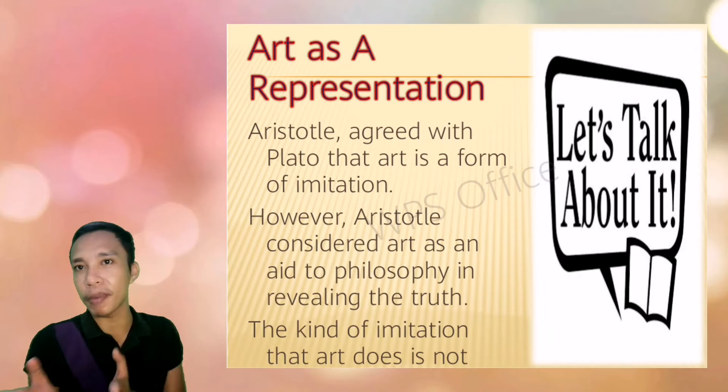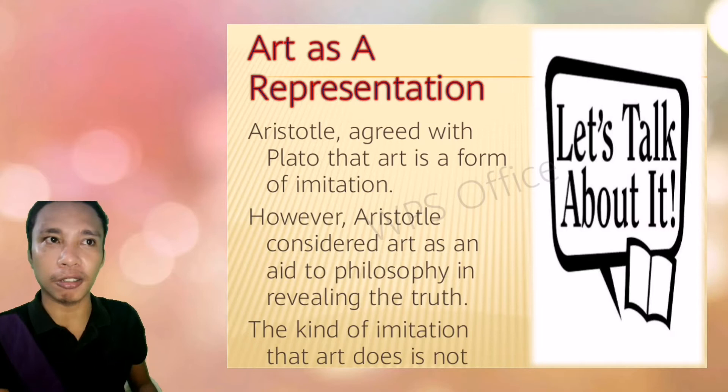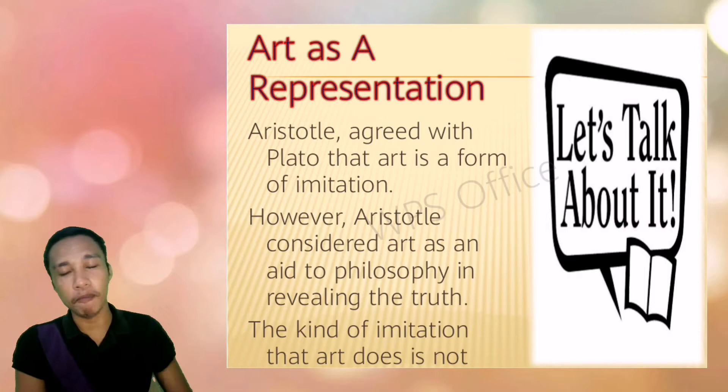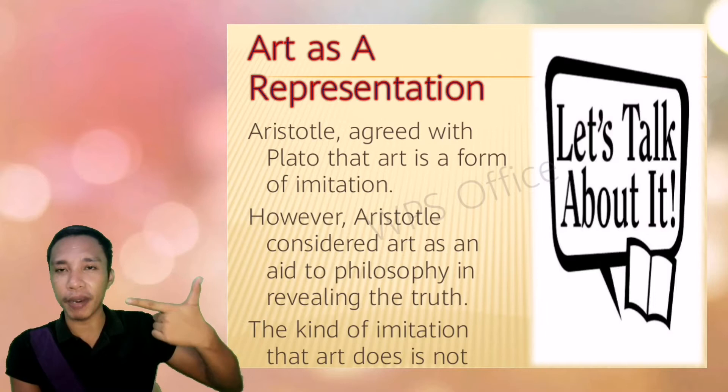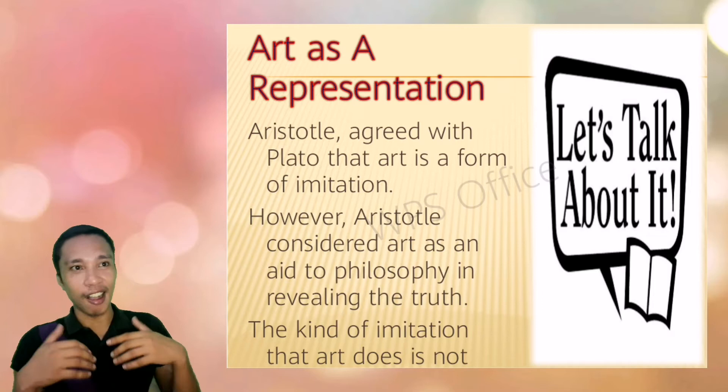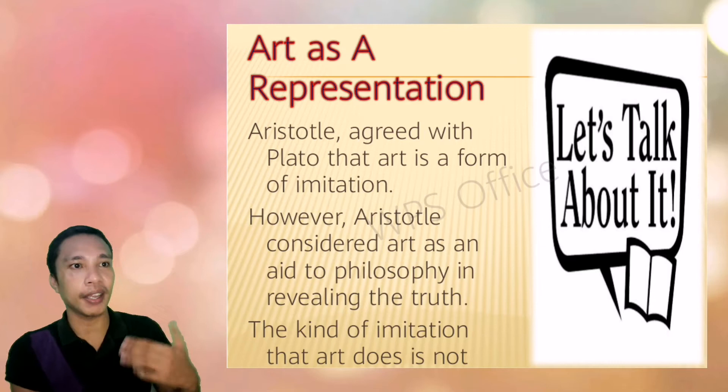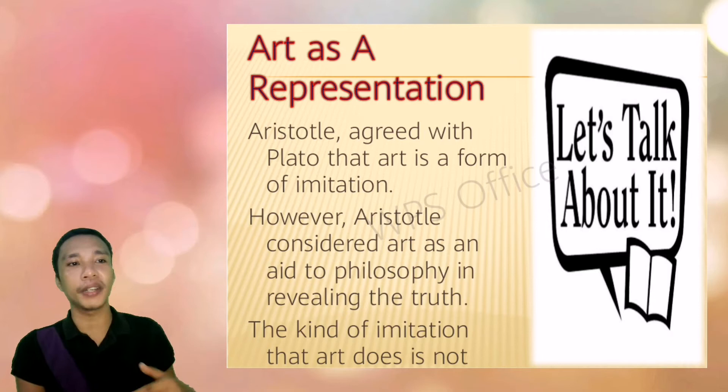That concludes art as an imitation. Now there's another perspective — art as a representation. Imitation is the actual copy, like parroting. Aristotle agreed with Plato that art is a form of imitation. However, according to Aristotle, he considered art as an aid to philosophy in revealing the truth. The kind of imitation that art does is not arithmetical to reaching the fundamental truth of the world — it doesn't require mathematical or arithmetical solutions to reach that fundamental truth.